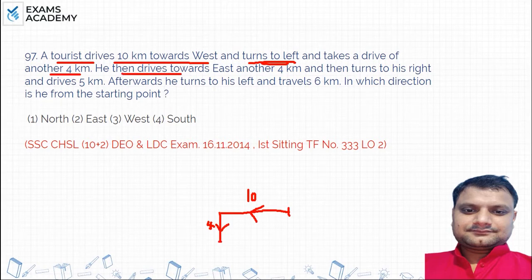Now he says, he then drives towards east another 4 km. Then he goes to east and 4 km. So, 4 km is going here. This position is going to 4 km. Here he goes.